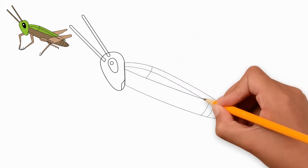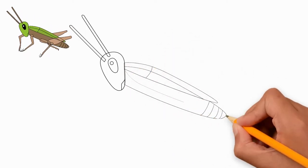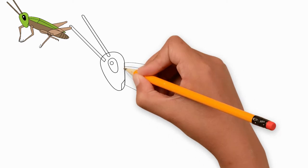Now draw the body of a grasshopper. Draw folded wings and draw stripes in the lower abdomen.